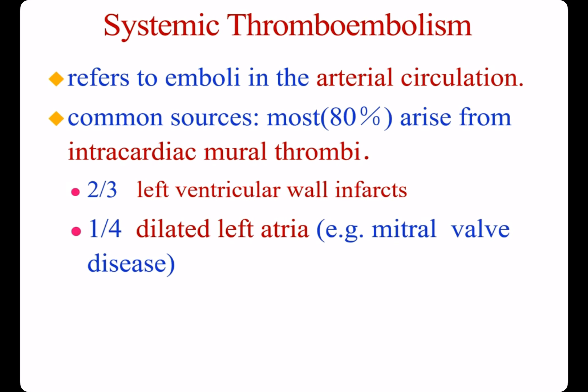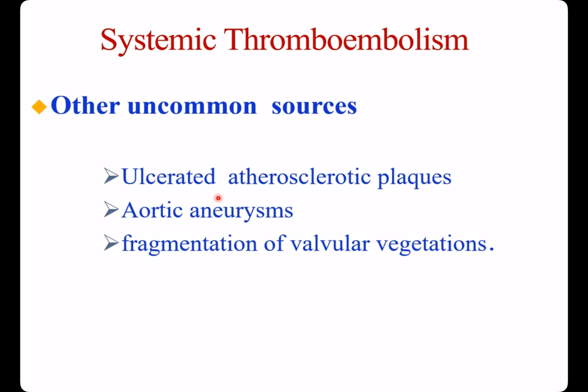Two-thirds fall from left ventricular wall infarctions; one-fourth from dilated left atria, for example in mitral valve disease. Other uncommon sources for systemic thromboembolism include isolated atherosclerotic plaques, aortic aneurysms, and fragmentation of valvular vegetations.